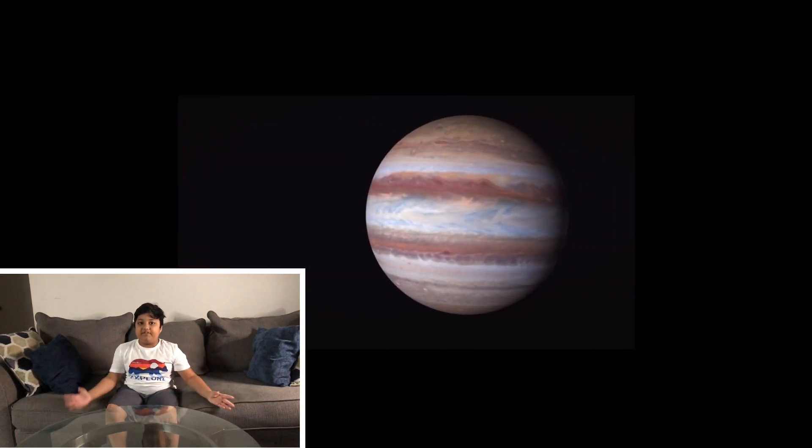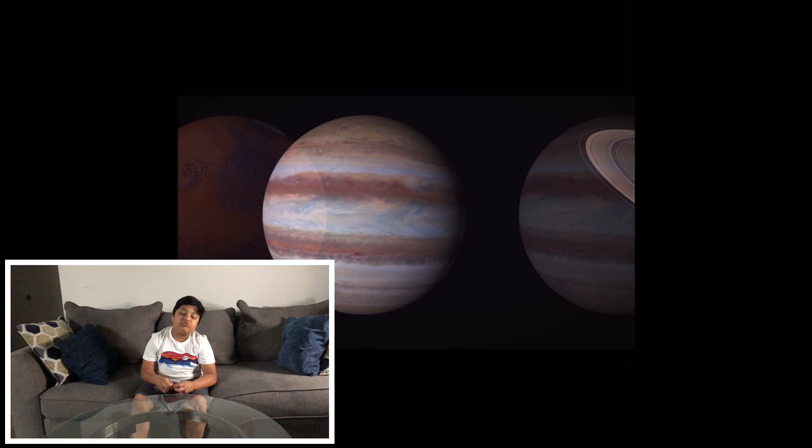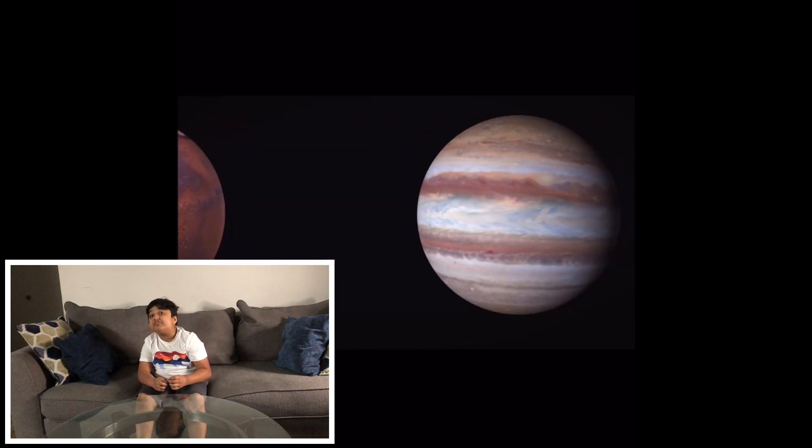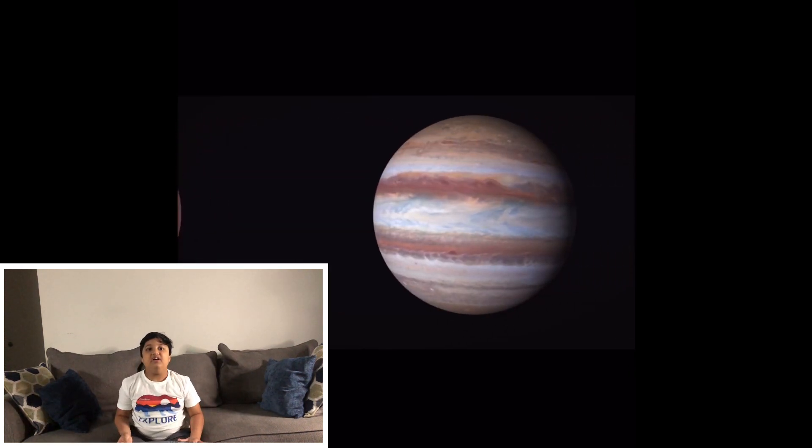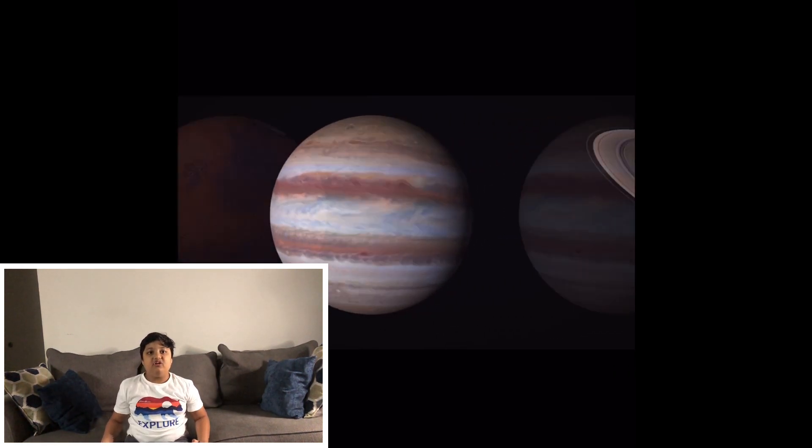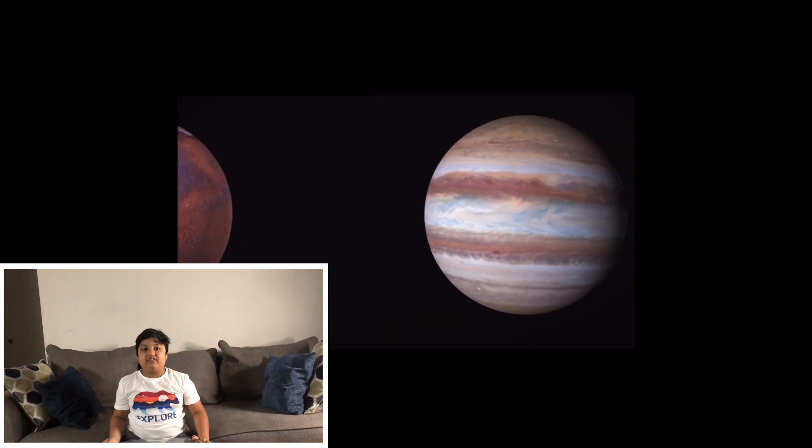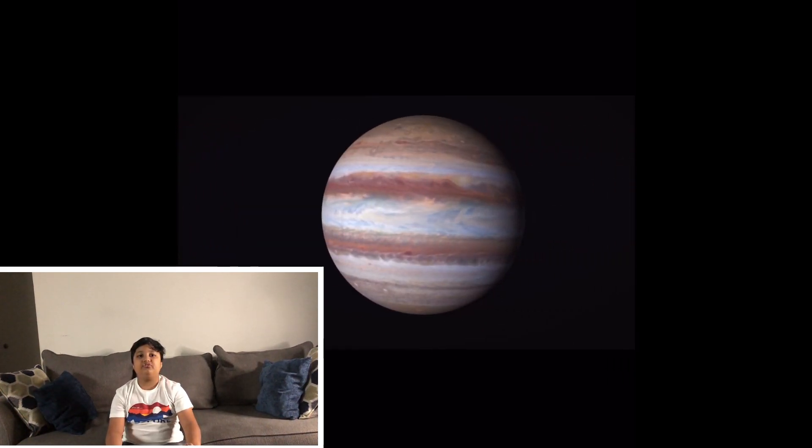Jupiter has 67 moons circling around it and 57 are the smallest. There are two moons that are as big as Mercury and other moons are as big as Mount Everest or Mount Kilimanjaro.